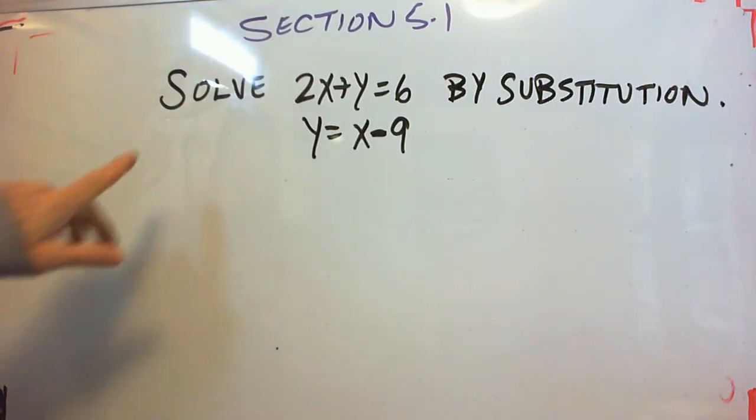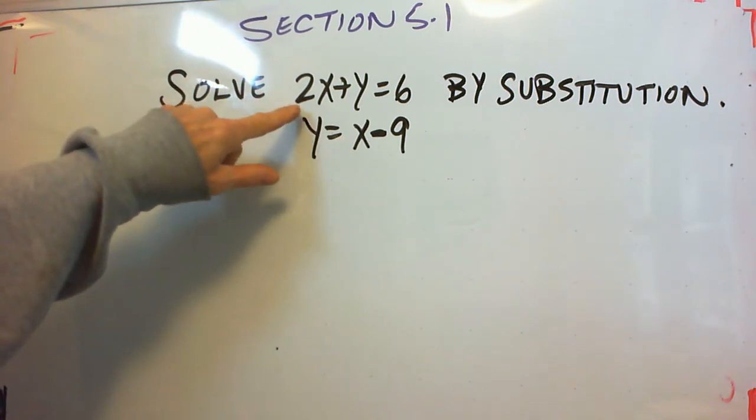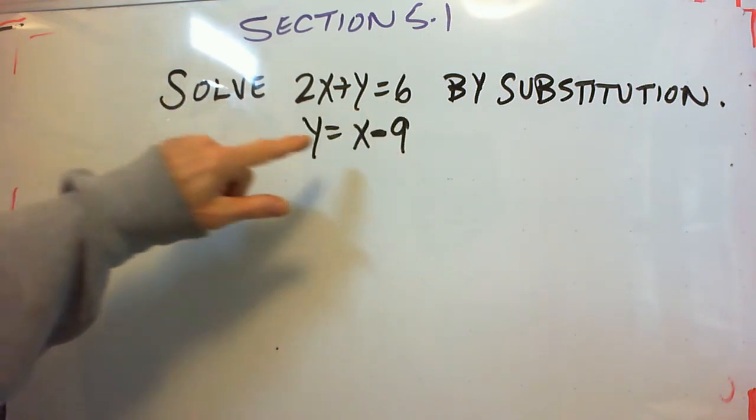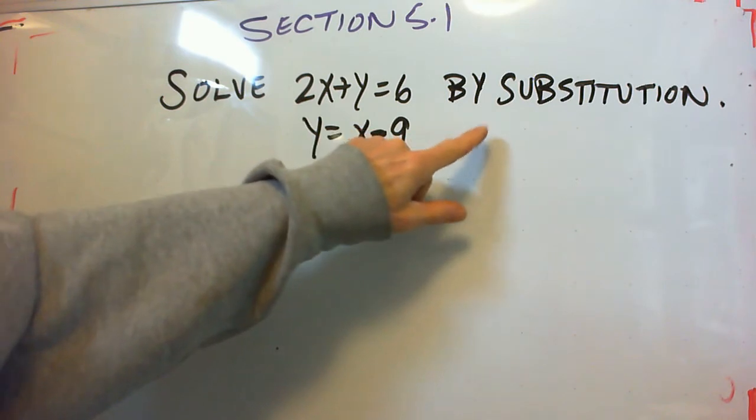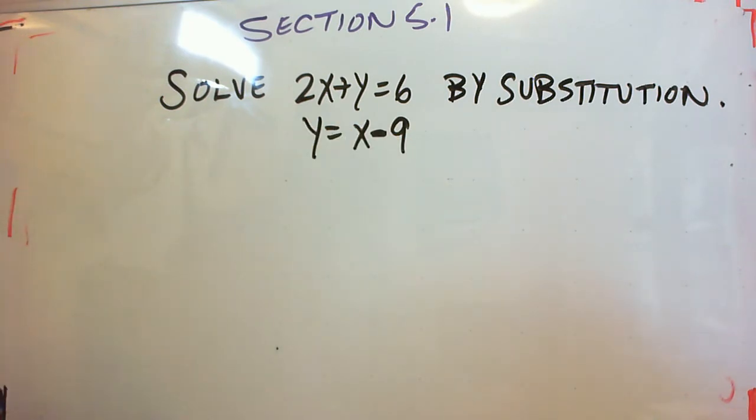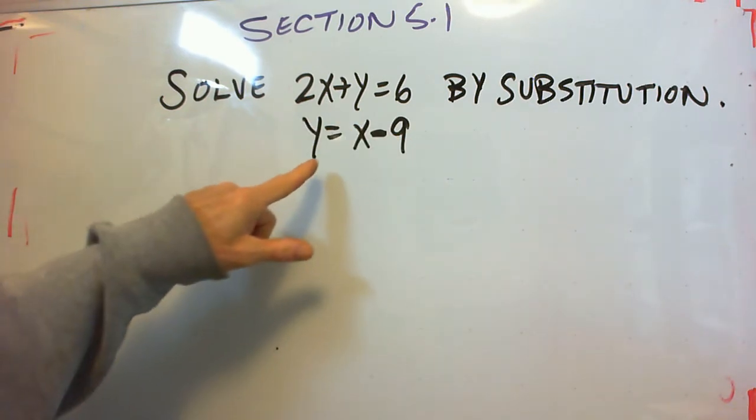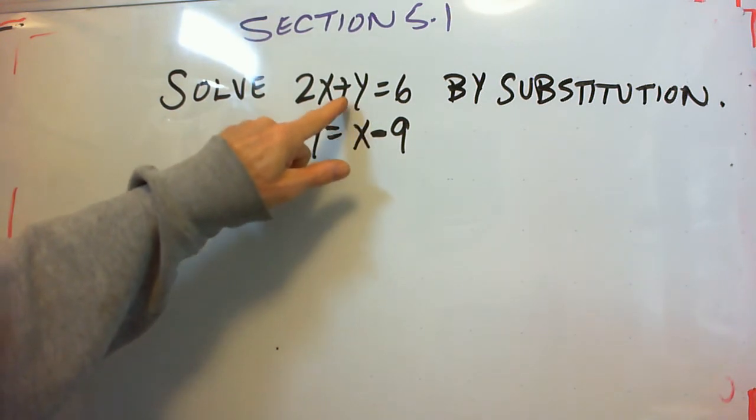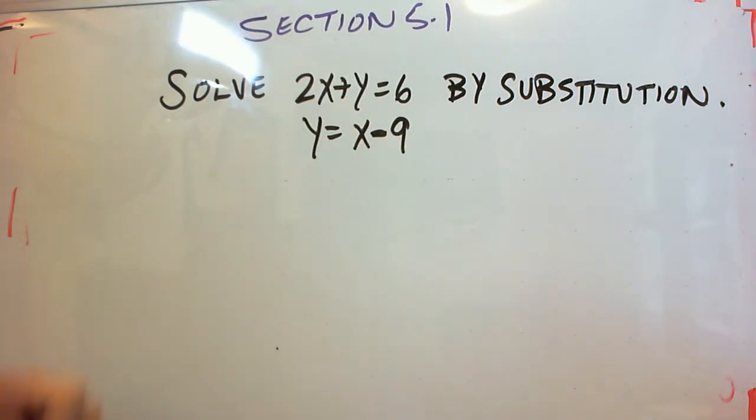In our next problem, we're going to solve the system 2x plus y equals 6, y equals x minus 9 by substitution. That means we substitute from one equation into the other so that we can get one equation with one unknown and then solve for that unknown. Using that solution to find the other unknown.